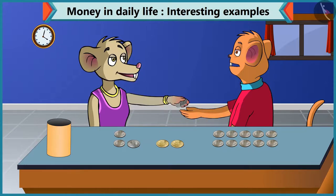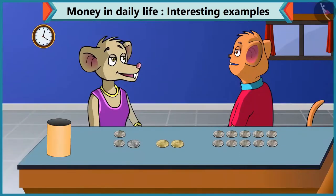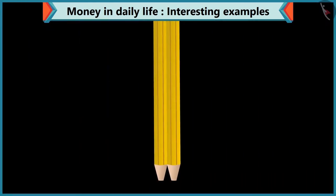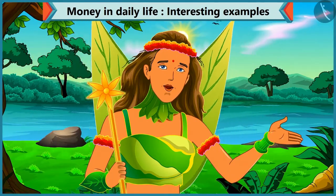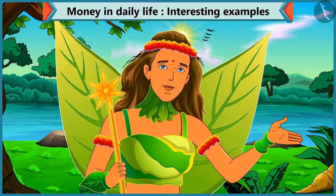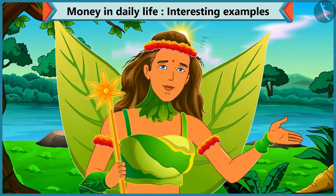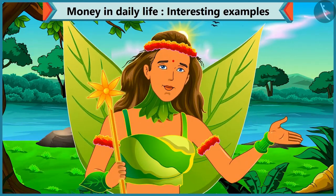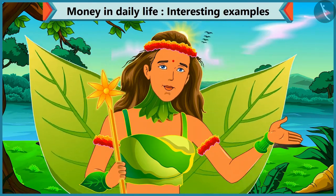Here is for your new pen — 5 coins of 2 rupees, that is 10 rupees. Chi Chi has learnt to make an amount by adding various coins. Today we learnt to make some amount by adding different coins. In the next video, we will learn to make an amount by adding notes and coins. Thanks for joining us.